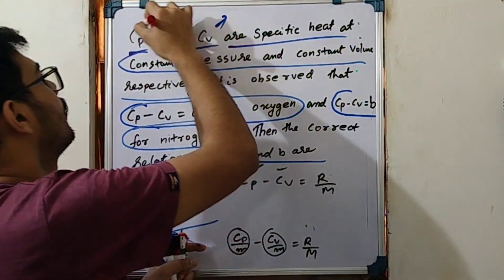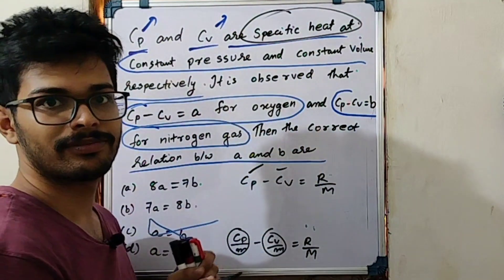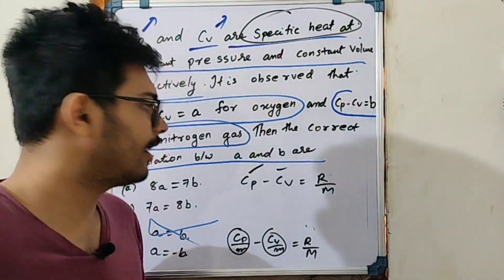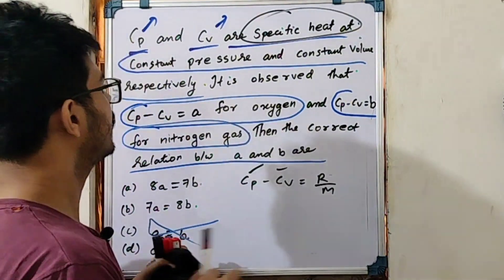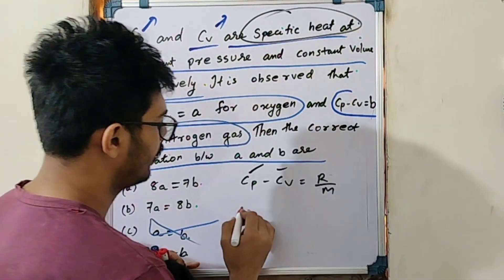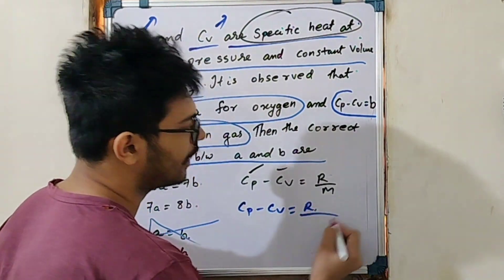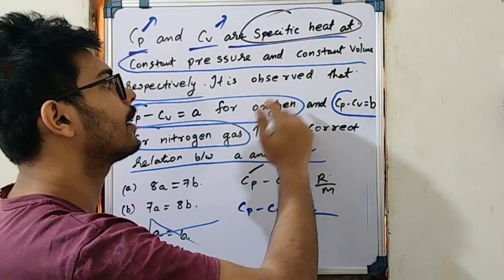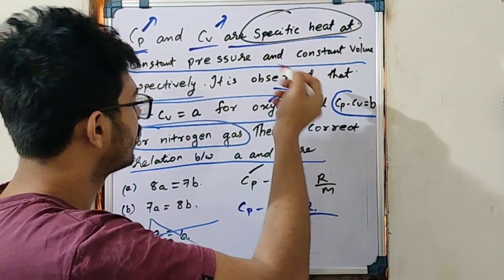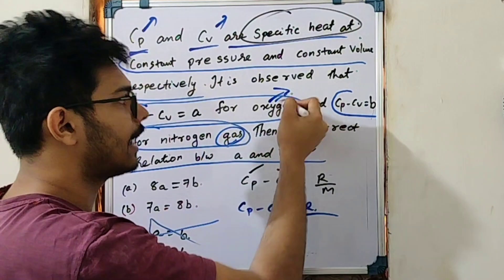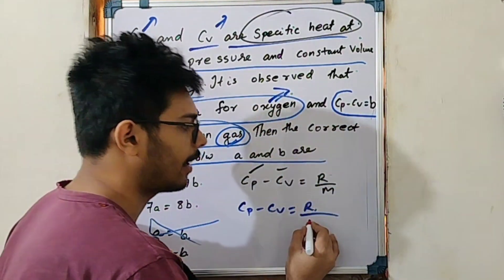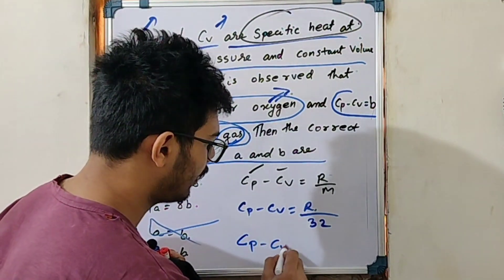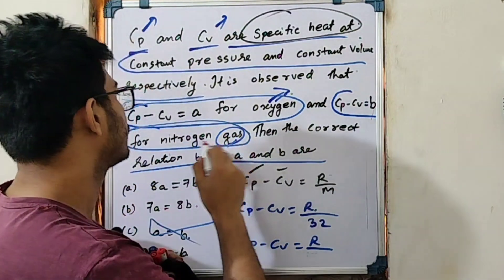We are dealing with specific heats here. For oxygen, which is diatomic with molecular mass 32, CP minus CV equals R divided by 32. For nitrogen, which is also diatomic with molecular mass 28, CP minus CV equals R divided by 28.